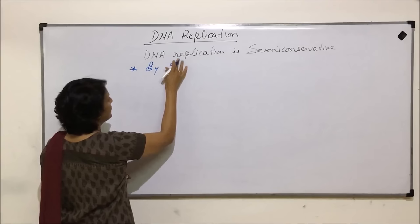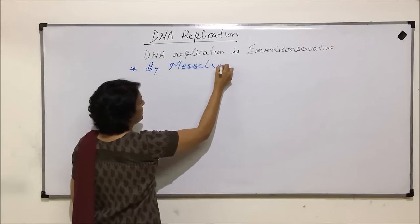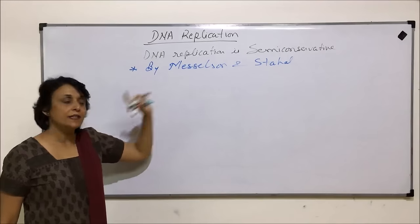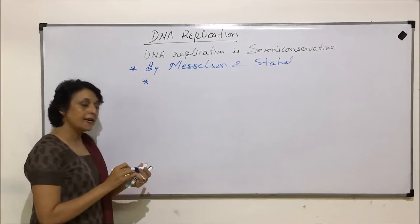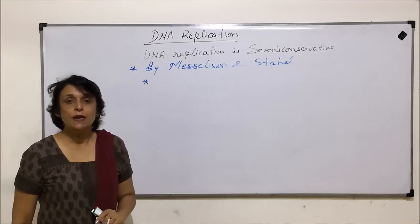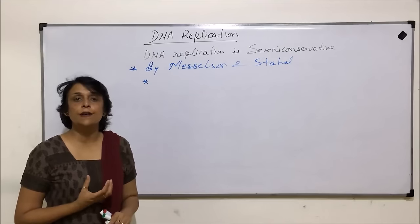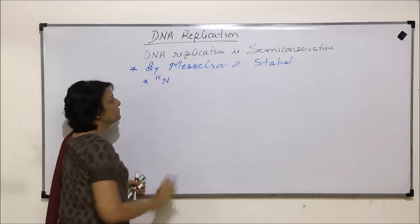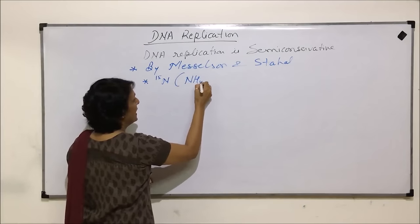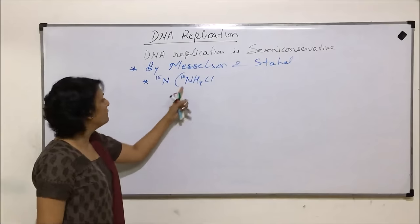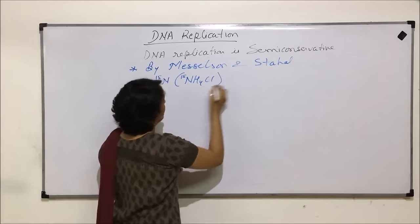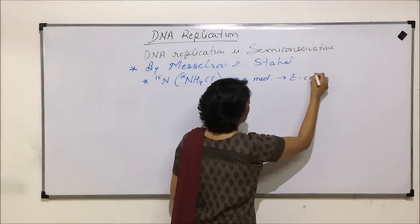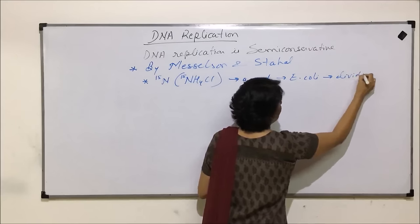The experiment which was done to prove this semi-conservative mode was by Meselson and Stahl. They proved that DNA replication takes place in this semi-conservative manner. What they did was use heavy nitrogen, and in this heavy nitrogen-containing medium, they allowed the bacterium E. coli to replicate.